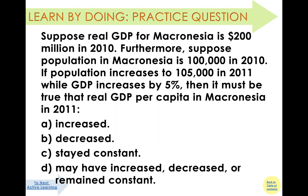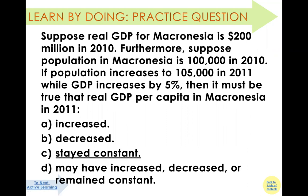First, let's look at why we should examine GDP per capita instead of total GDP. Suppose real GDP for Macronisia is $200 million in 2010, with a population of 100,000 in 2010 that grows to 105,000 in 2011, while GDP also grows by five percent. The answer is that real GDP per capita stays constant — the total GDP increased by five percent, but in the meantime the population also grew by five percent, meaning GDP growth is exactly offset by population growth.